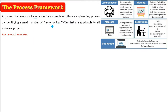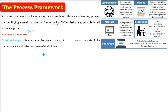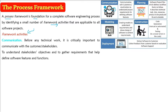The first framework activity in a process framework is communication. Before doing any technical work, it is very important to communicate and talk with the customer and stakeholders. Why? Because you need to know what they want. You will gather all the information and all the requirements, and then only you will define the features and functions — what kind of screen they want, what actions they want, on which kind of machine. Only the user can tell you.